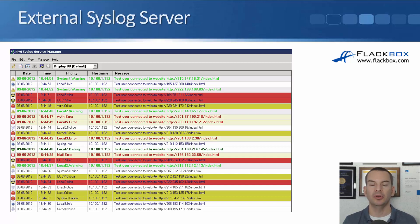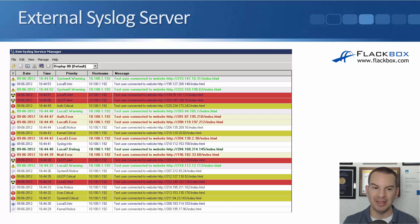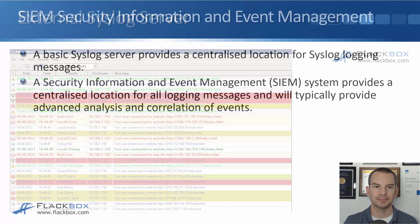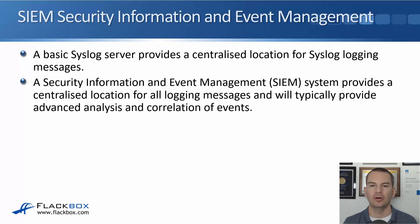This is an example of what you would see on an external Syslog server — the Kiwi Syslog server, which has a free version. You can see the information listed there: the date of the event, the time the event happened, the priority which is the severity level, the hostname so you can see the actual device that logged the event, and then a message describing what actually happened. That gives you the benefit of centralizing all of your logs.